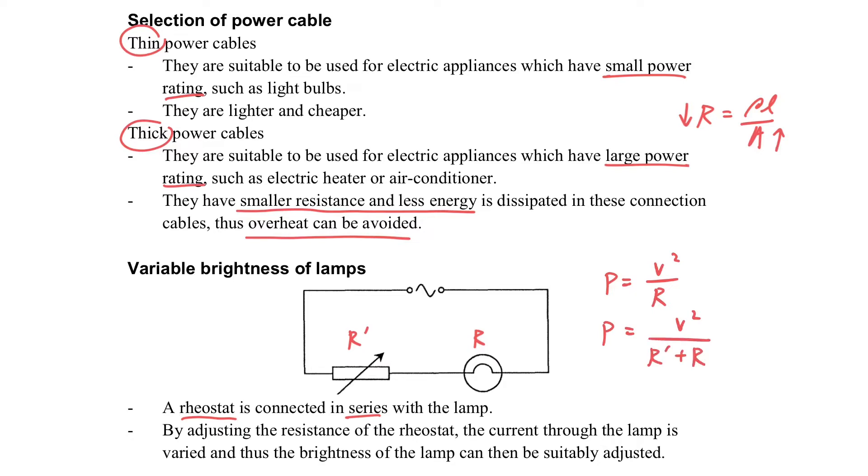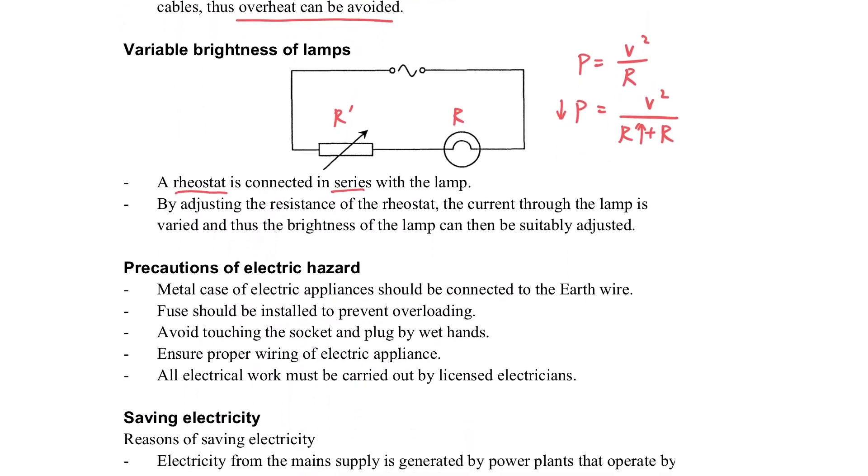And you can see the equation, when the rheostat increases resistance, the power will be decreased. That means the light bulb will become dimmer, so we can adjust the brightness.